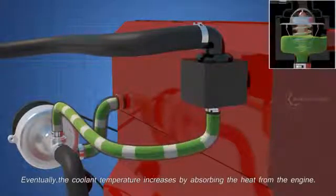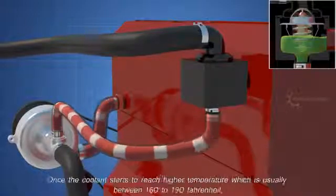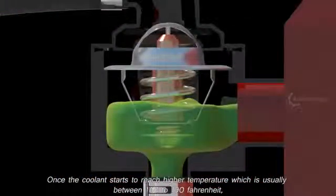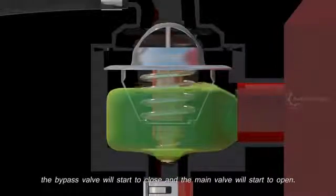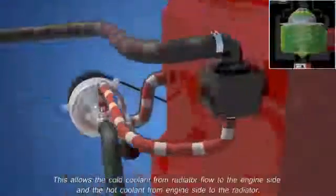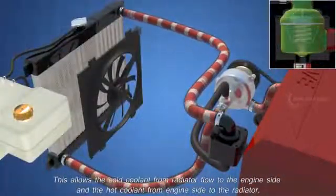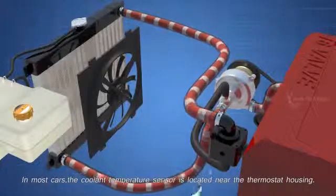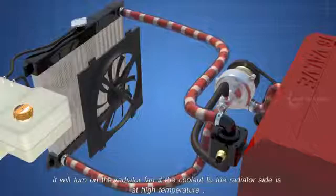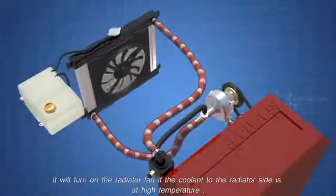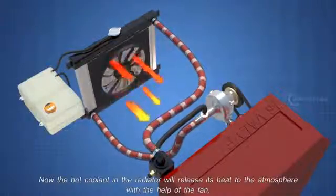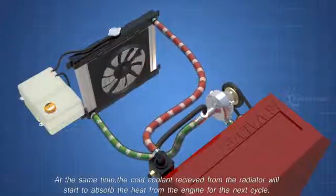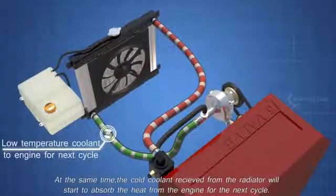Eventually, the coolant temperature increases by absorbing the heat from the engine. Once the coolant starts to reach higher temperature, which is usually between 160 to 190 Fahrenheit, the bypass valve will start to close and the main valve will start to open. This allows the cold coolant from radiator flow to the engine side, and the hot coolant from engine side flow to the radiator. In most cars, the coolant temperature sensor is located near the thermostat housing. It will turn on the radiator fan if the coolant to the radiator side is at high temperature. Now the hot coolant in the radiator will release its heat to the atmosphere with the help of the fan. At the same time, the cold coolant received from the radiator will start to absorb the heat from the engine for the next cycle.